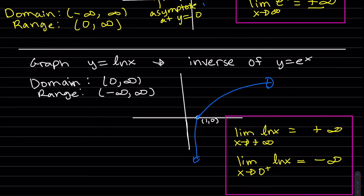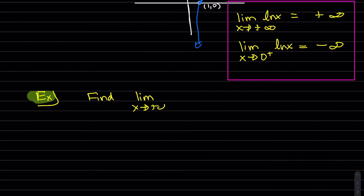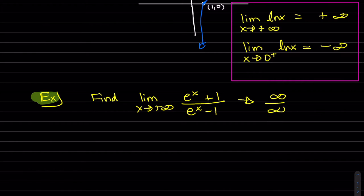Okay, so let's do some examples. So when you plug in infinity, we do get infinity on top, infinity on the bottom. You can see here, e to the infinity will be infinity plus 1.